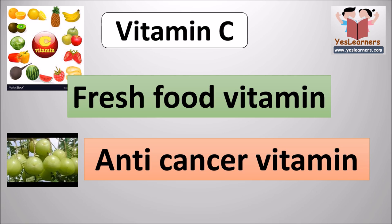Vitamin C is excreted through urine. The vitamin which gives immunity to our body and also heals wounds is vitamin C. The first artificially synthesized vitamin is vitamin C. Vitamin C is rich in gooseberry and sour-tasted fruits.